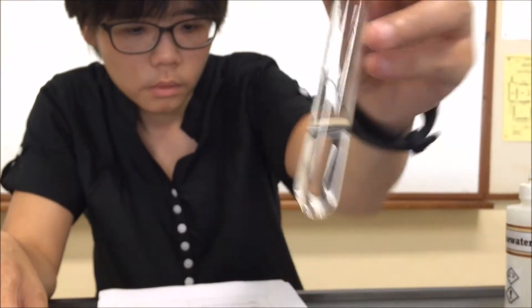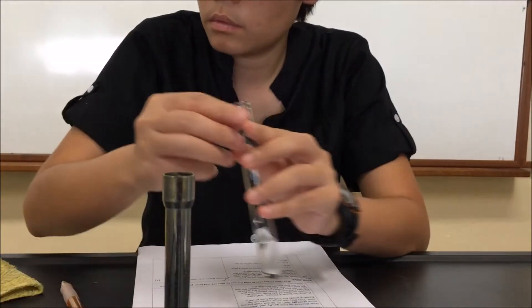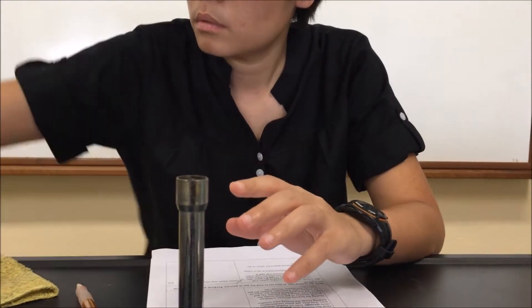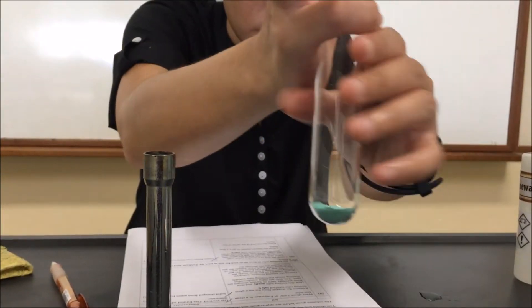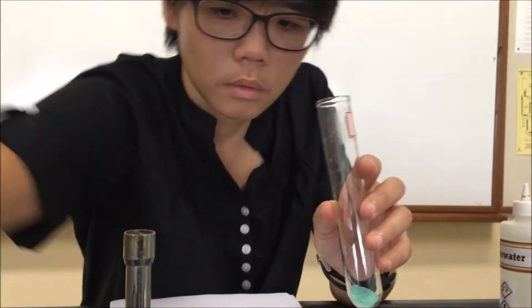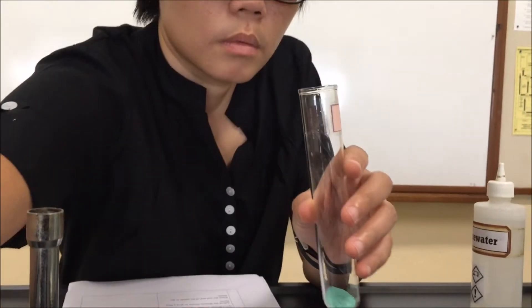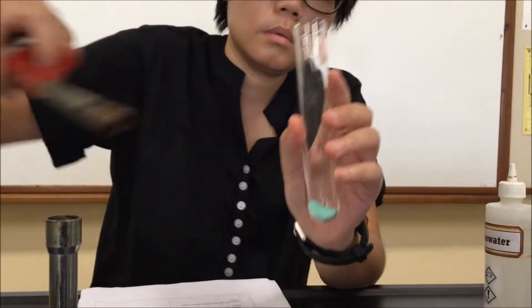Then we get ready to heat salt X, which is this green solid, green powder. So we remove the stopper, close the air hole like the branch of a Bunsen burner. We will heat the tube gently, we always start heating gently.